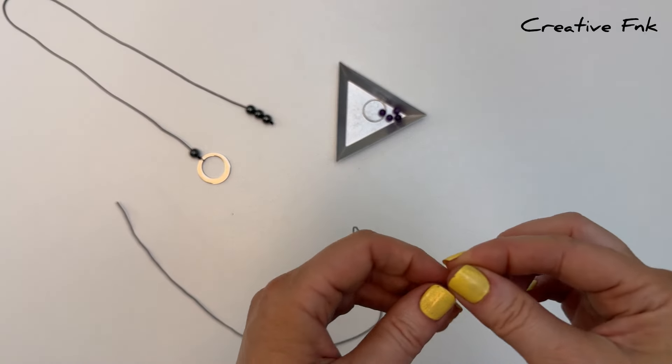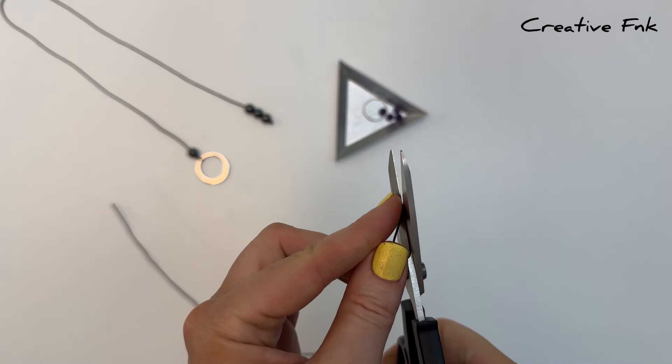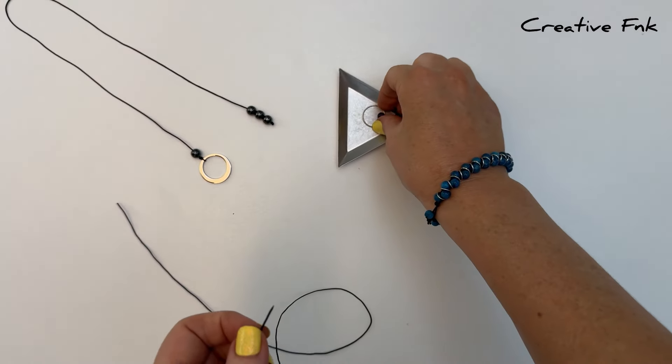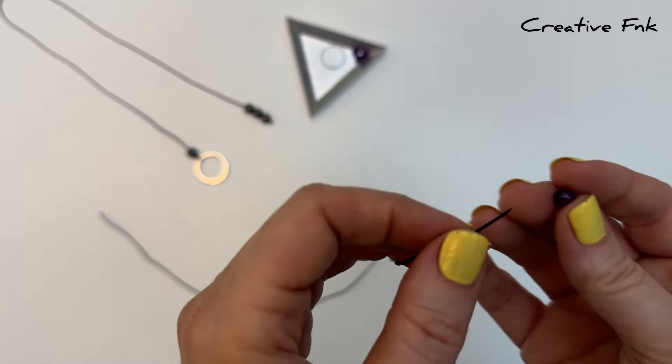Now we start by placing three beads onto our thread. I cut the end of my thread on an angle to make it easier to thread through the beads, then place our three beads onto the thread.